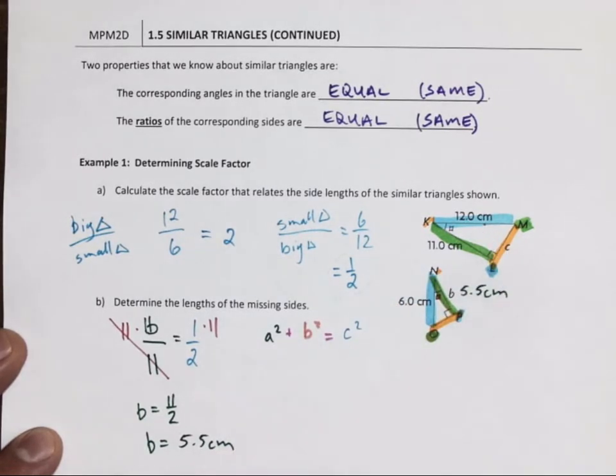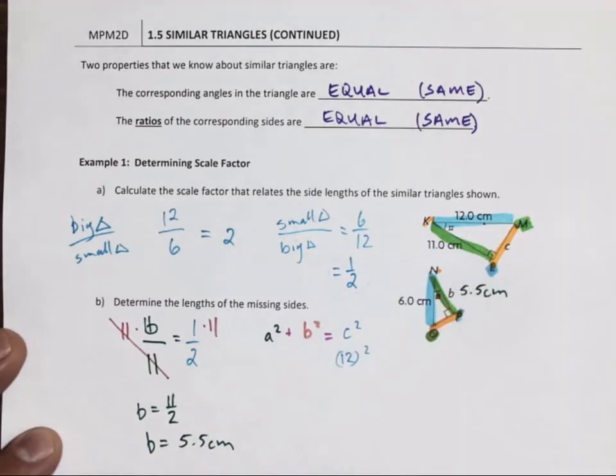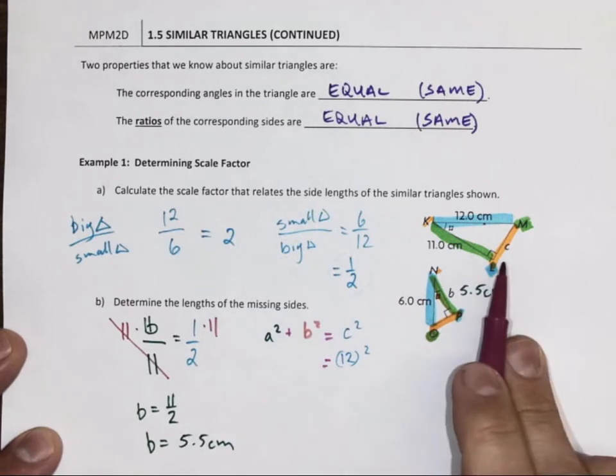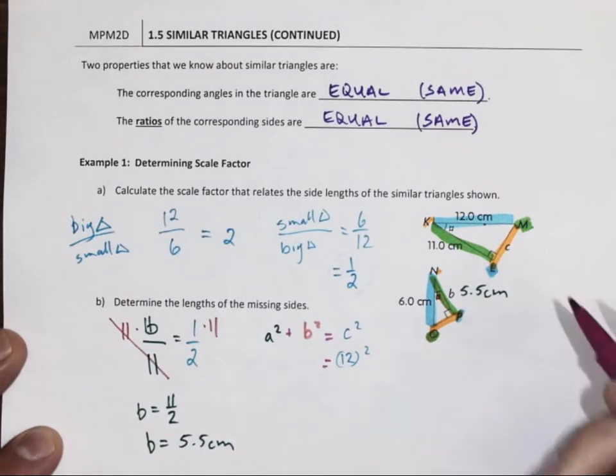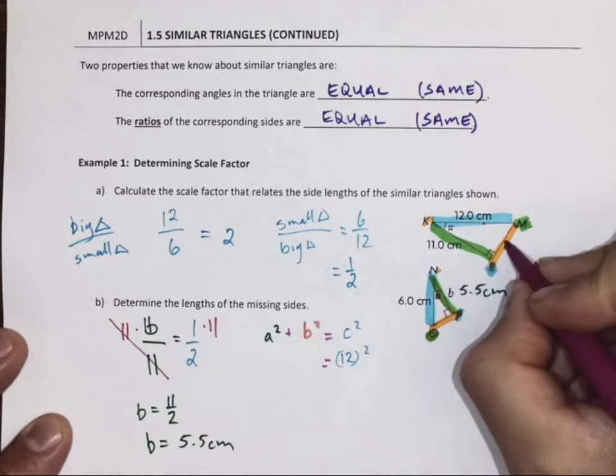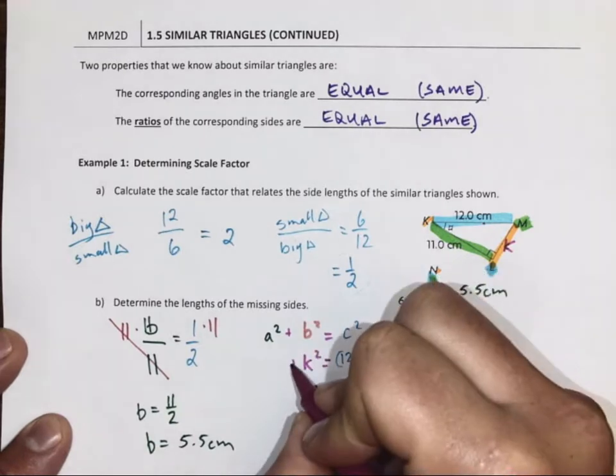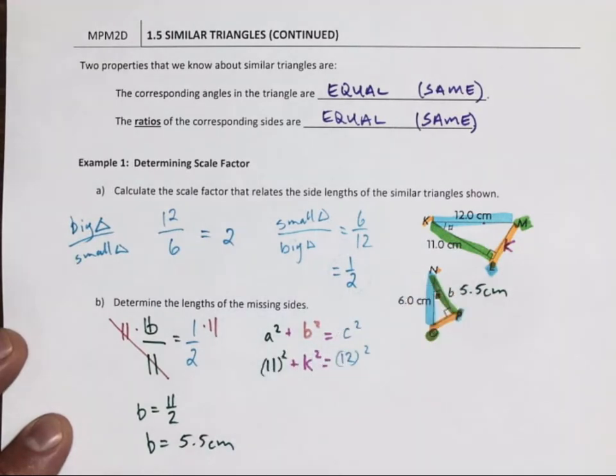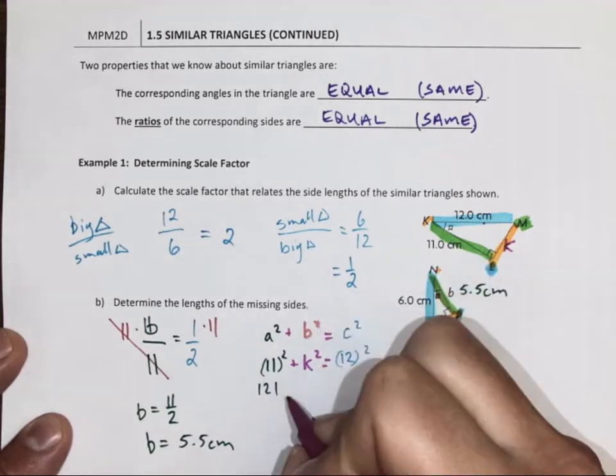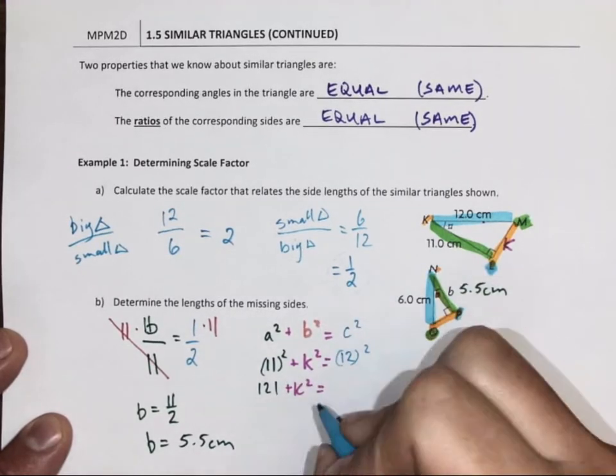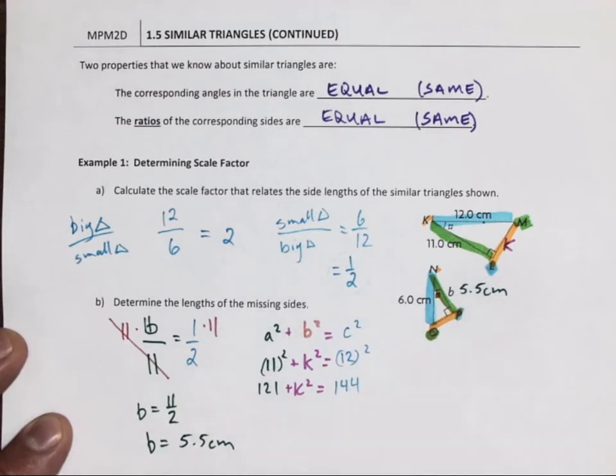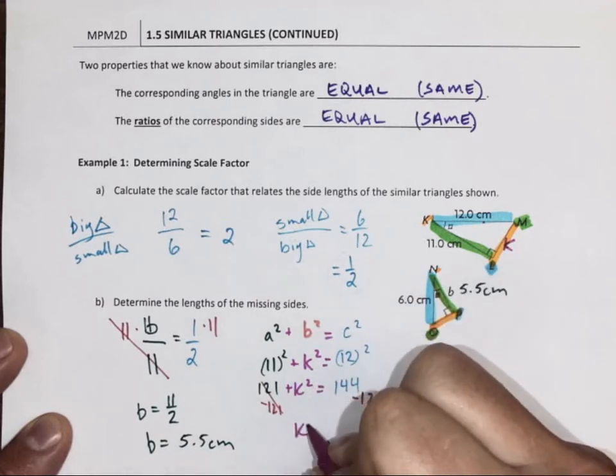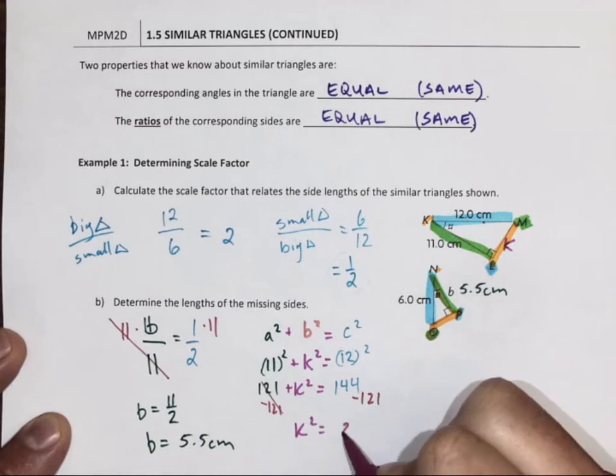So I have a C squared. I'm trying to find my B squared, which in this case is the letter C. I'm going to write an X just so we're not super confused. Actually, let's label it K because that's what it should be. And my A squared is 11. 11 squared. So let's math: 11 squared is 121 plus K squared equals 12 squared, 144. Take away 121 from the left, which means we take away 121 from the right. 144 take away 121 is 23.